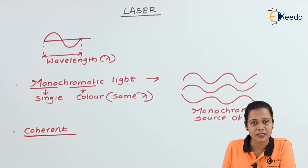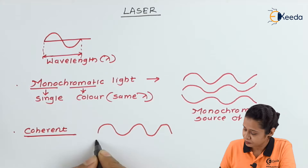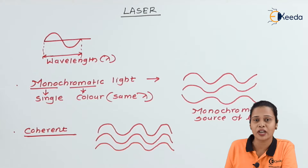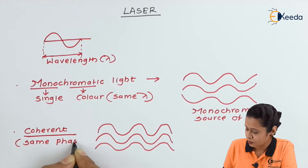For coherency, we should require a monochromatic source first. If we have a monochromatic source, it means lambda is the same and the waves are traveling with the same phase — that source of light is called a monochromatic and coherent source of light. Coherent means same phase or no phase difference.